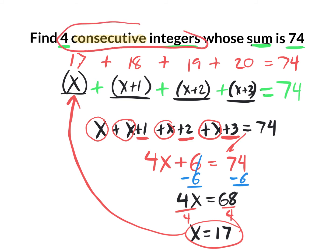So x equals 17, which is the first number. The next number is 18, then 19, then 20. If you add 17 plus 18 plus 19 plus 20, it gives you 74. Type in your answer as 17, 18, 19, 20 with no spaces. More important than the answer is understanding how to create the equation — first number is x, next is x plus 1, then x plus 2, and so on.